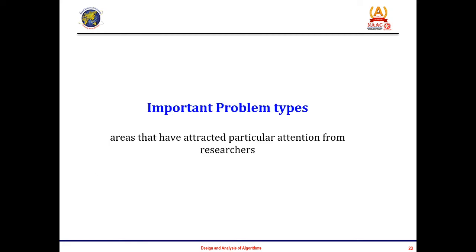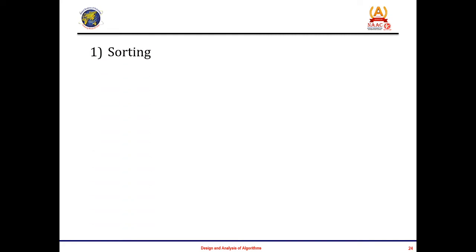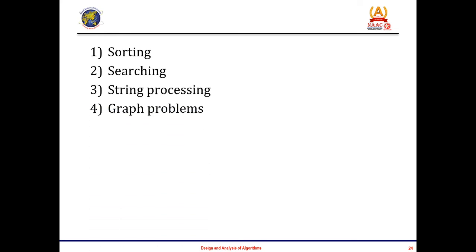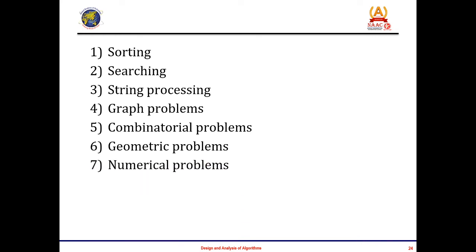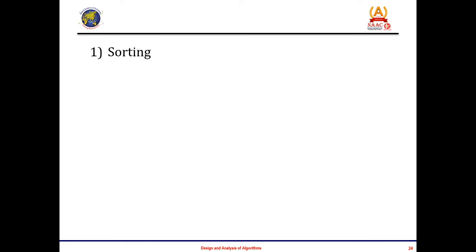Let us look into the next aspect: Important Problem Types — the areas that have attracted particular attention from researchers. These seven important problem types are: sorting, searching, string processing, graph problems, combinatorial problems, geometric problems, and numerical problems. Majority of them you are already aware of. Let us quickly run through and have a brief understanding of all seven.